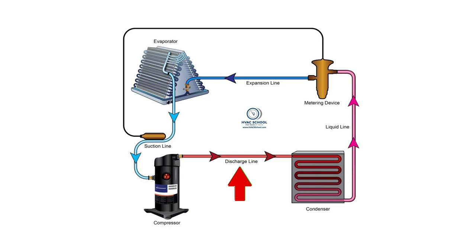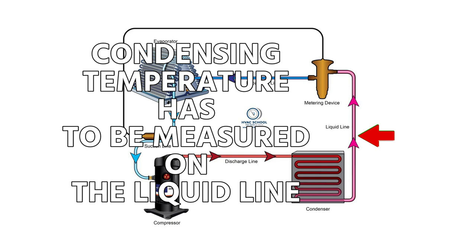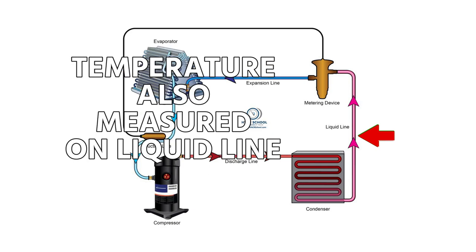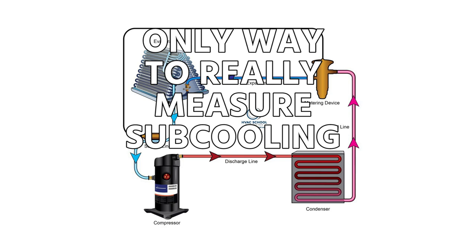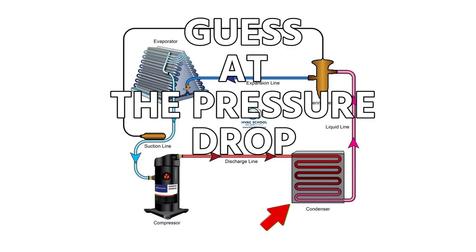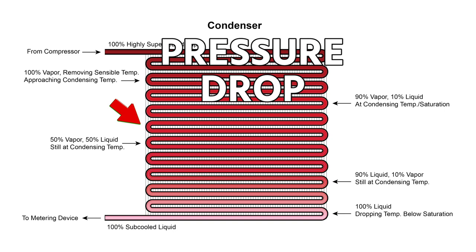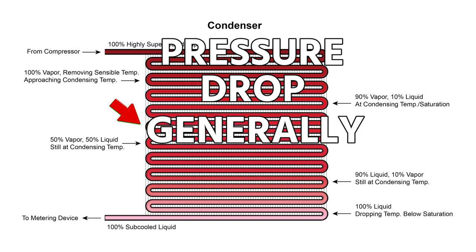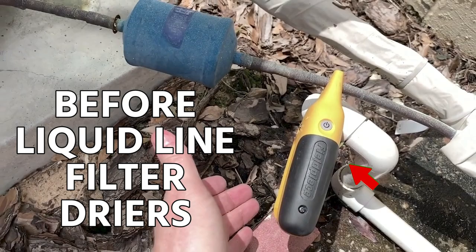A common mistake is somebody will measure the pressure and temperature on a discharge line and attempt to do subcooling — and that doesn't work. Subcooling has to be measured pressure-wise on the liquid line, and then the temperature also needs to be measured on the liquid line. In some cases, certain package units or rooftop units don't have a port on the liquid line, which makes it challenging. In those cases, the only way to really measure subcooling is to estimate the pressure drop across the condenser — I've been told that pressure drop is generally 10 to 15 psi. But there is no way to accurately measure subcooling unless you can take a pressure on that liquid line, and the ideal place is right after the condenser and before any liquid line filter dryers.